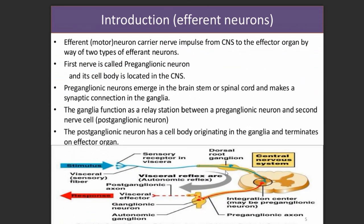Efferent neurons carry messages from the CNS to the muscles or any other gland — from the CNS to the effector organ.